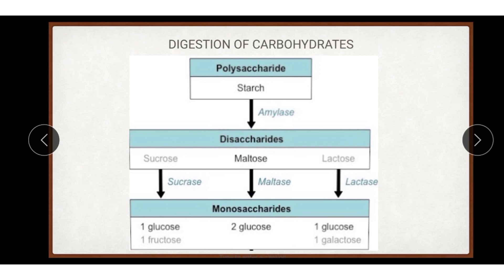Now we will see digestion of carbohydrates. Carbohydrates are of three kinds: polysaccharides, disaccharides, and monosaccharides. Polysaccharides and disaccharides are broken into monosaccharides during digestion. Starch and cellulose are polysaccharides present in cereals, grains, potato, tubers, and fruits. Sucrose is present in cane sugar, maltose in malt, and lactose in milk are disaccharides. Enzymes which act on carbohydrates are called carbohydrases.